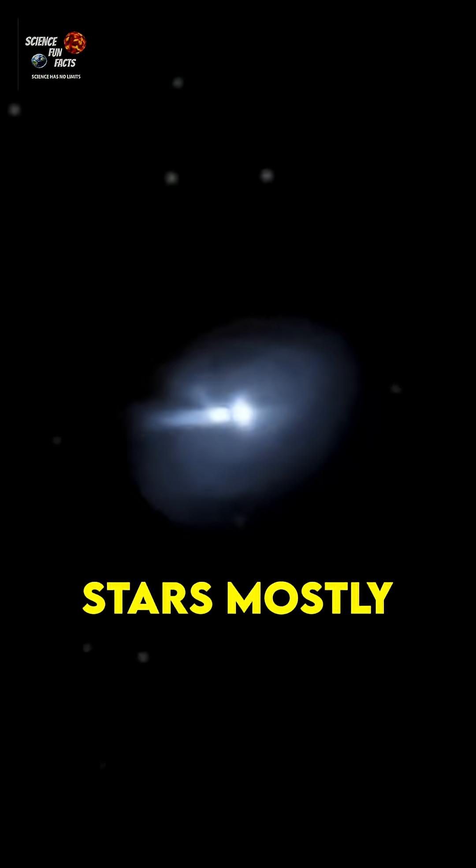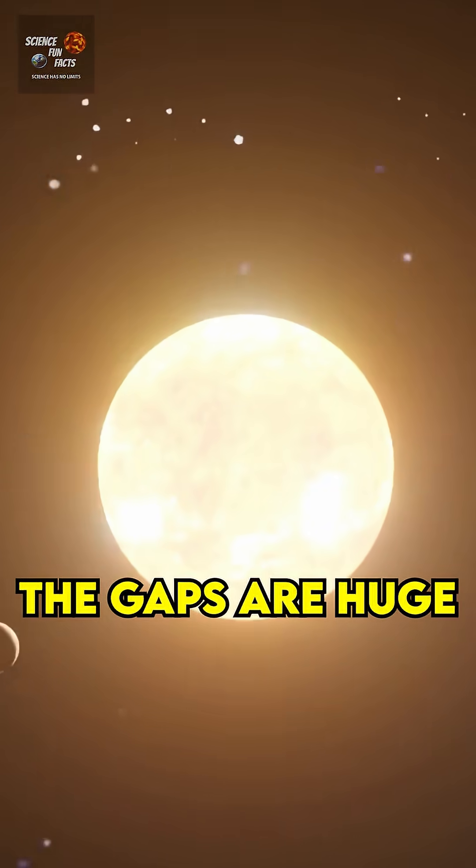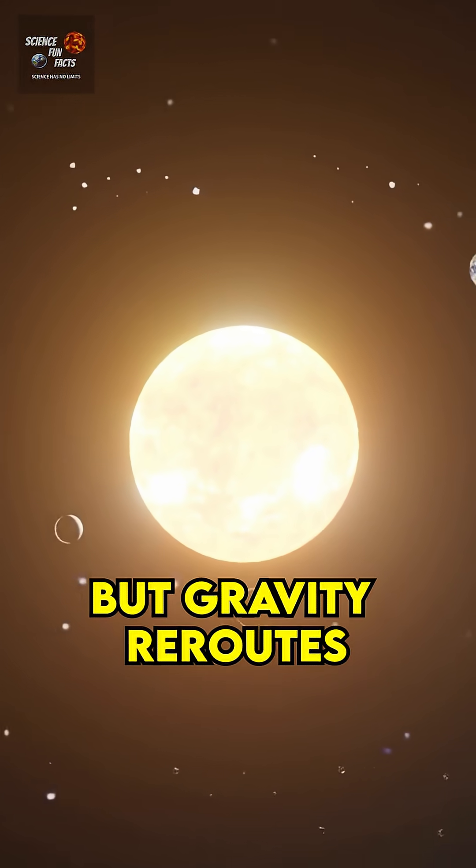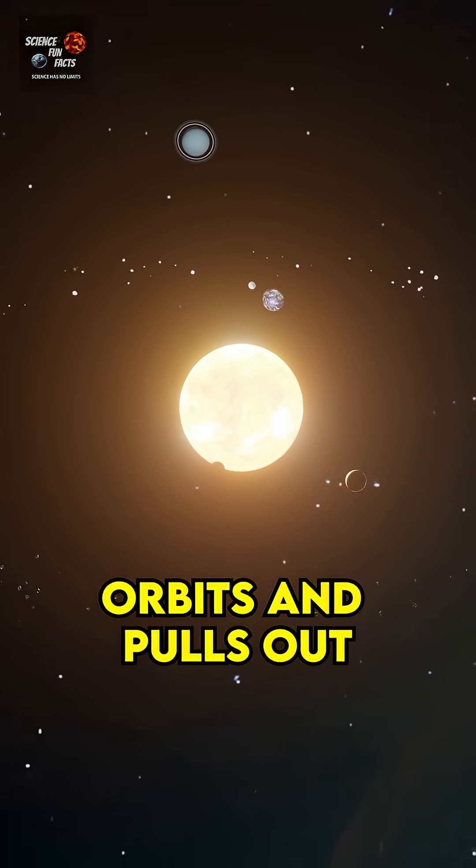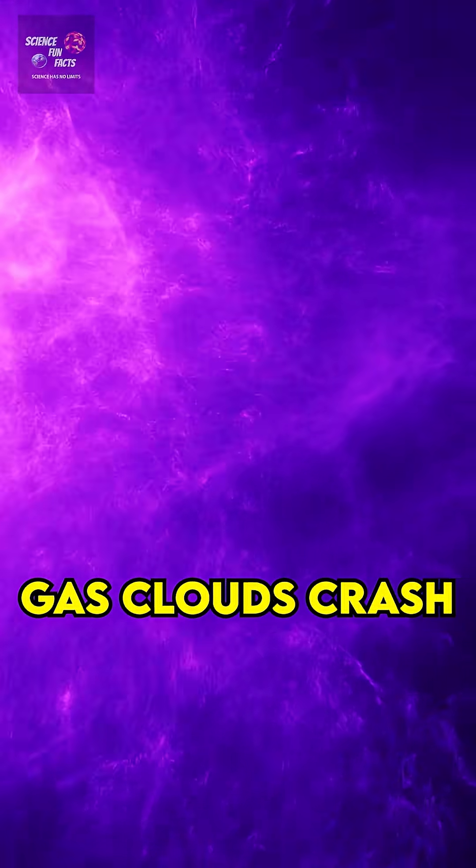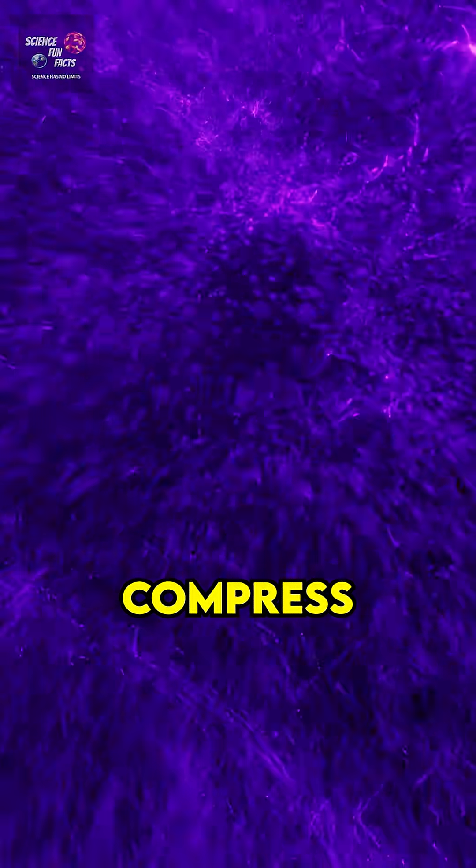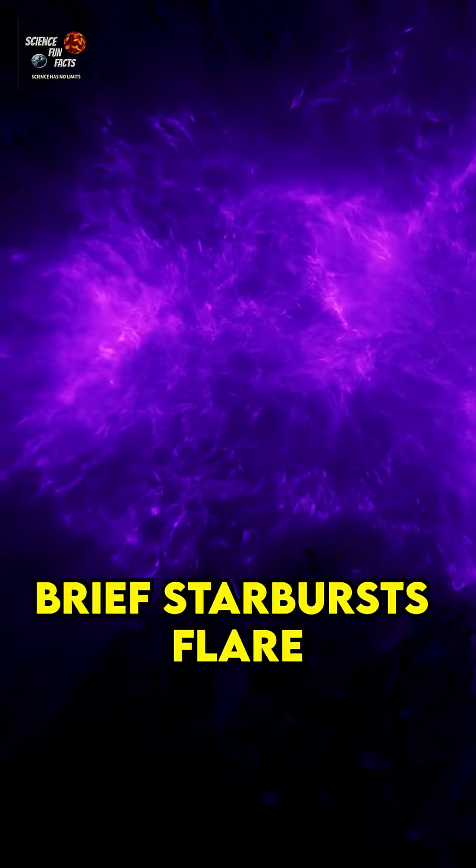When big galaxies meet, stars mostly miss each other. The gaps are huge. But gravity reroutes orbits and pulls out long tidal tails. Gas clouds crash, compress, ignite. Brief starburst flare.